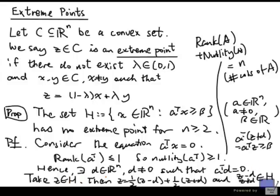So, z cannot be an extreme point because I can find distinct points. In this case, my x and y are z minus d and z plus d, and my lambda is a half, such that z can be written as this combination.